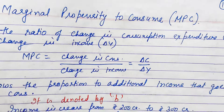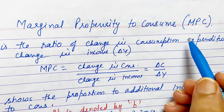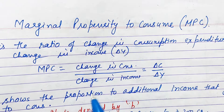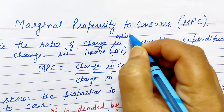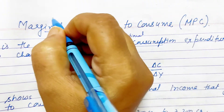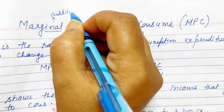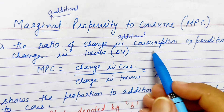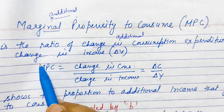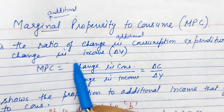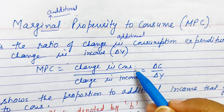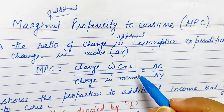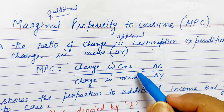Now the second component: marginal propensity to consume, called MPC. MPC is the ratio of change in consumption — it is also called additional. When the word 'marginal' is used, marginal means additional. So it is the ratio of additional consumption to additional income. In average we took total consumption and total income; in marginal we take the ratio of additional consumption and additional income.